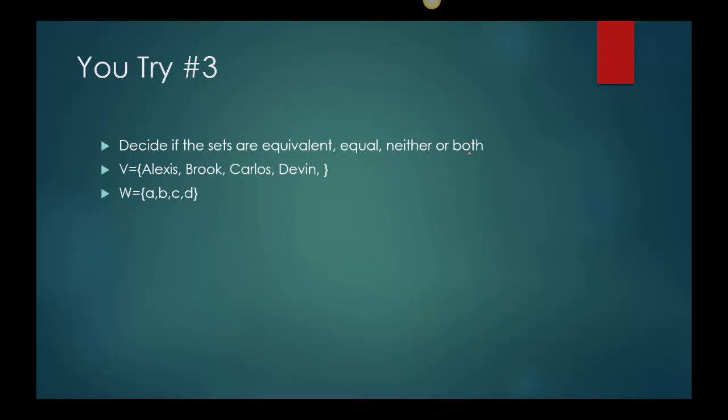Here's the last one: decide if the sets are equivalent, equal, neither, or both. So V={Alexis, Brooke, Carlos, Devin} and then W={A,B,C,D}. So what do you think? Equivalent, equal, neither, or both?